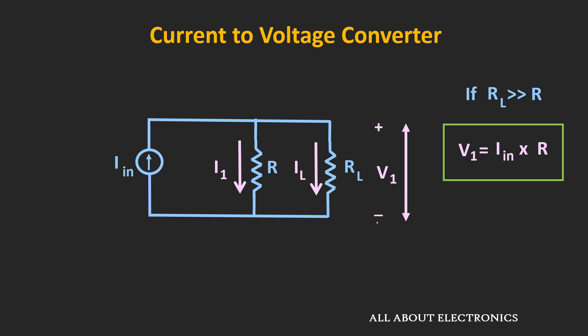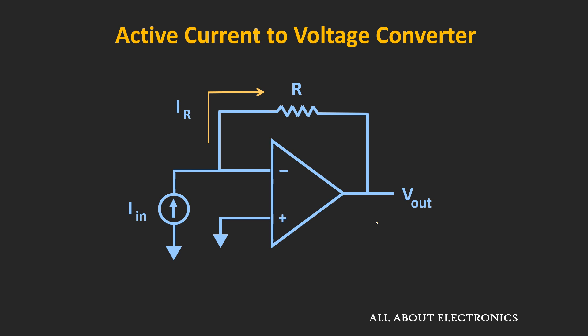This problem can be avoided by using an active converter. Here, the input current is connected at the inverting terminal of the op-amp, and the feedback resistor R is connected between the output terminal and the inverting input terminal. The non-inverting terminal is at ground potential. Because of the virtual ground concept, this node will also be at zero voltage.